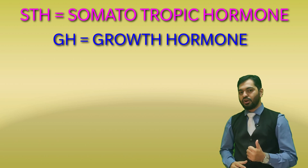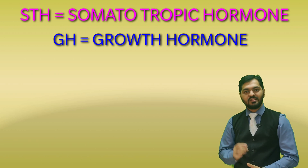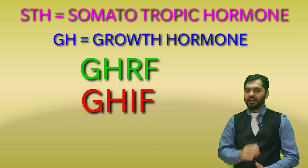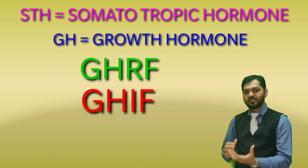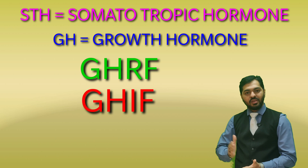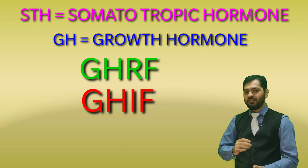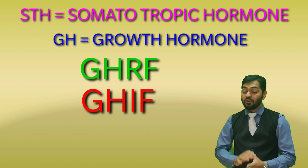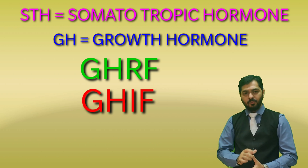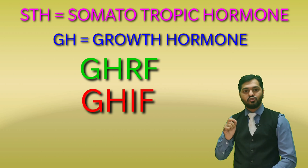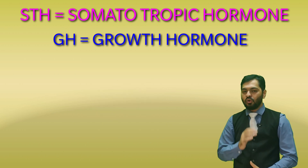Growth Hormone is mainly controlled by the hypothalamus through factors known as GHRF and GHIF. GHRF is the Growth Hormone Releasing Factor — whenever the anterior pituitary receives GHRF, Growth Hormone is secreted. GHIF is the Growth Hormone Inhibiting Factor — when the hypothalamus produces GHIF, the pituitary stops secreting Growth Hormone. It is this hypothalamus-pituitary coordination that regulates growth. GHIF is also known as Somatostatin — remember this terminology for your entrance exam.